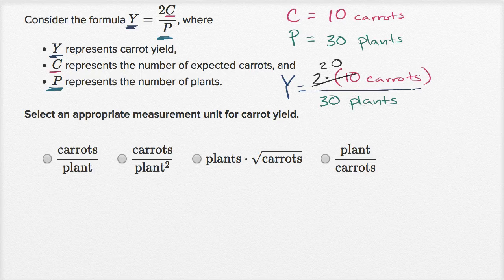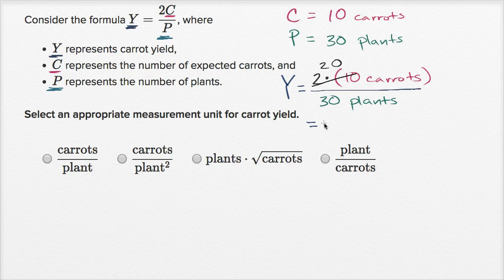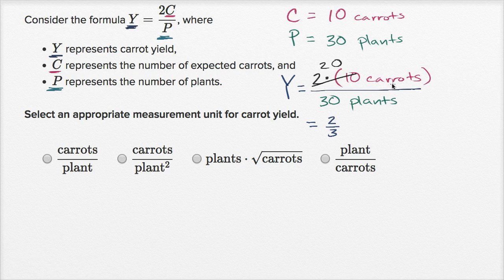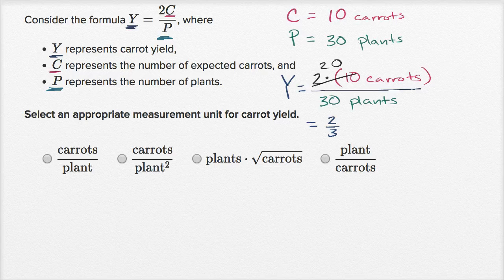So we can write the numerator as 20 carats divided by 30 plants. And so that is going to be equal to, you could divide the numbers, so it would be 20 divided by 30, which would be two-thirds. Two-thirds carats per plant.